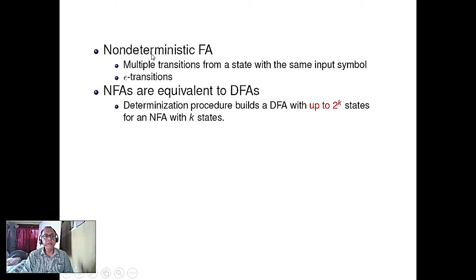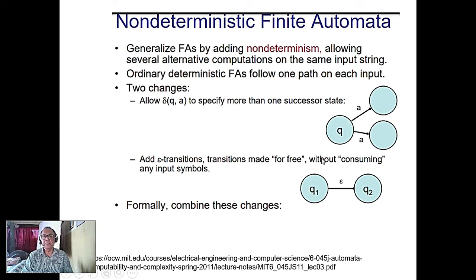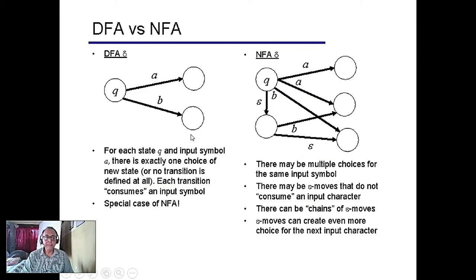In a non-deterministic finite automaton, you can have epsilon transitions — jumping from one state to another without consuming input. In a deterministic automaton, epsilon transitions are not allowed, and with any input symbol, you can go to only one state. Both models are proven to be equivalent in expressive power.